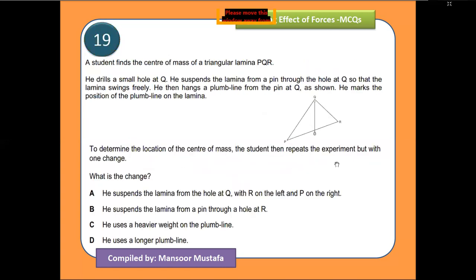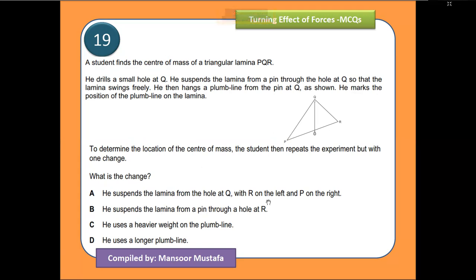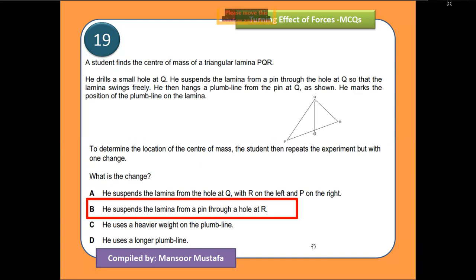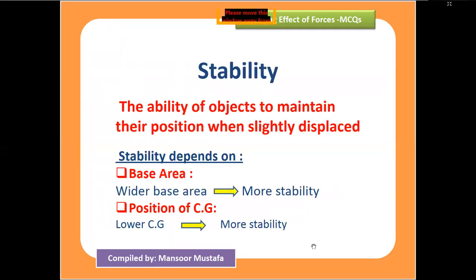The next question relates to the plumb line method. A student wants to find the center of gravity of an object. They first hang the object from position Q. The next step is to hang it from another position — either P or R. Since option P is not available in the choices, the correct next step is to hang it from position R.